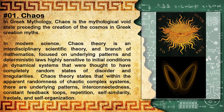Number 1: Chaos. In Greek mythology, chaos is the mythological void state preceding the creation of the cosmos in Greek creation myths. In modern science, chaos theory is an interdisciplinary scientific theory and branch of mathematics focused on underlying patterns and deterministic laws highly sensitive to initial conditions in dynamical systems that were thought to have completely random states of disorder and irregularities. Chaos theory states that within the apparent randomness of chaotic complex systems, there are underlying patterns, interconnectedness, constant feedback loops, repetition, self-similarity, fractals, and self-organization. The butterfly effect, an underlying principle of chaos, describes how a small change in one state of a deterministic non-linear system can result in large differences in a later state, meaning that there is sensitive dependence on initial conditions.